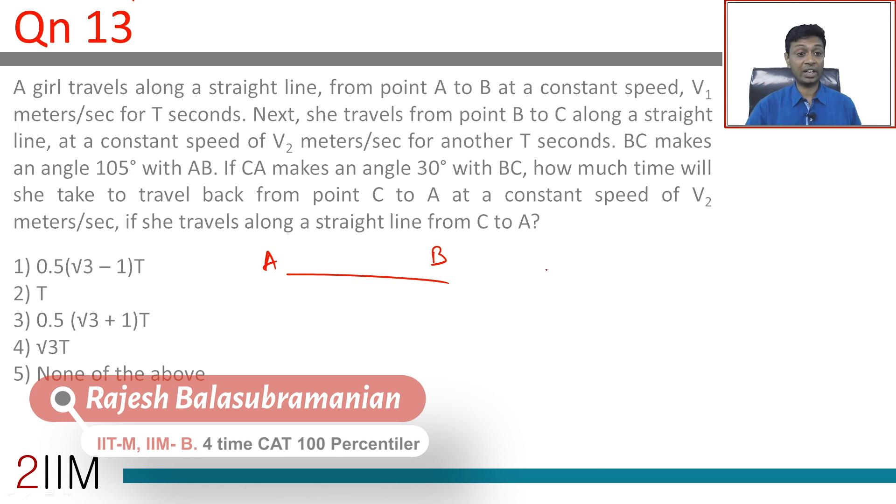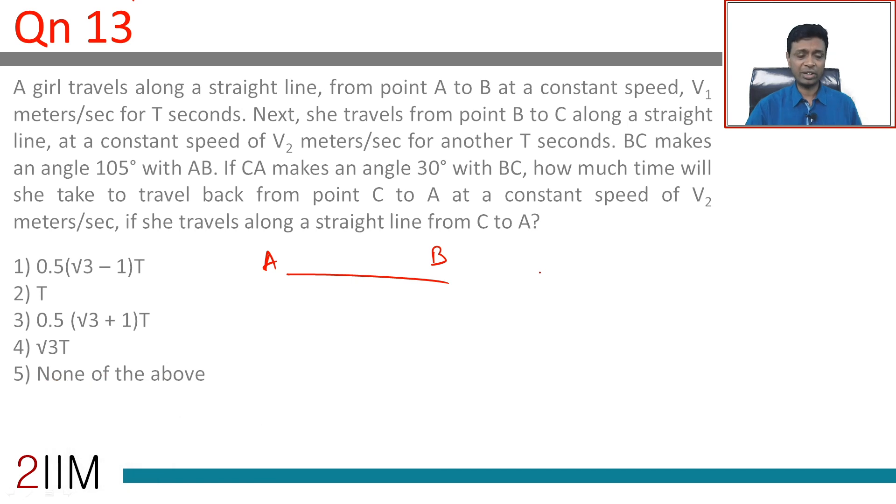B to C along a straight line at a constant speed of V2 for another T seconds. BC makes an angle of 105 degrees with AB. This is 105 degrees. This is V1 for T seconds. This is V2 for T seconds.